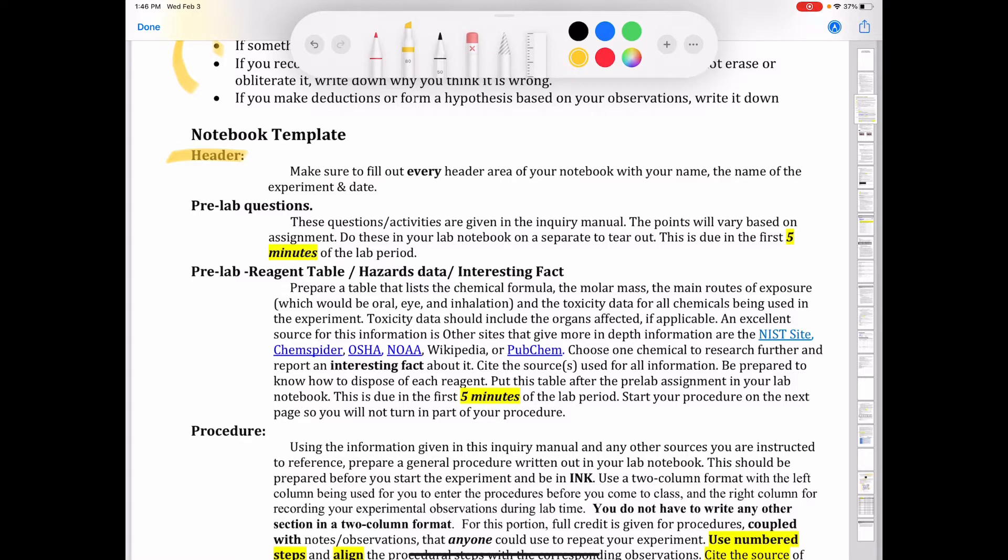The next part is the pre-lab questions, and the pre-lab questions are found in the experiment in the inquiry lab manual. We're going to take a look at the pre-lab questions for the first lab, the basic lab techniques. And then next you have a pre-lab reagent table, which includes hazards. An interesting fact, that's up to you. You can include that if you want, but you don't need to do that.